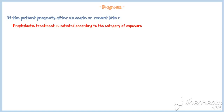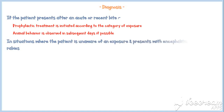Now let's discuss the diagnosis of rabies. If a patient presents after an acute or recent bite, prophylactic treatment is initiated according to the category of exposure without using any diagnostic method, while animal behavior is observed in subsequent days if possible. Diagnosis for rabies is usually required in situations where the patient is unaware of an exposure and presents with encephalitis and suspected rabies, or after the death of a person due to suspected rabies.